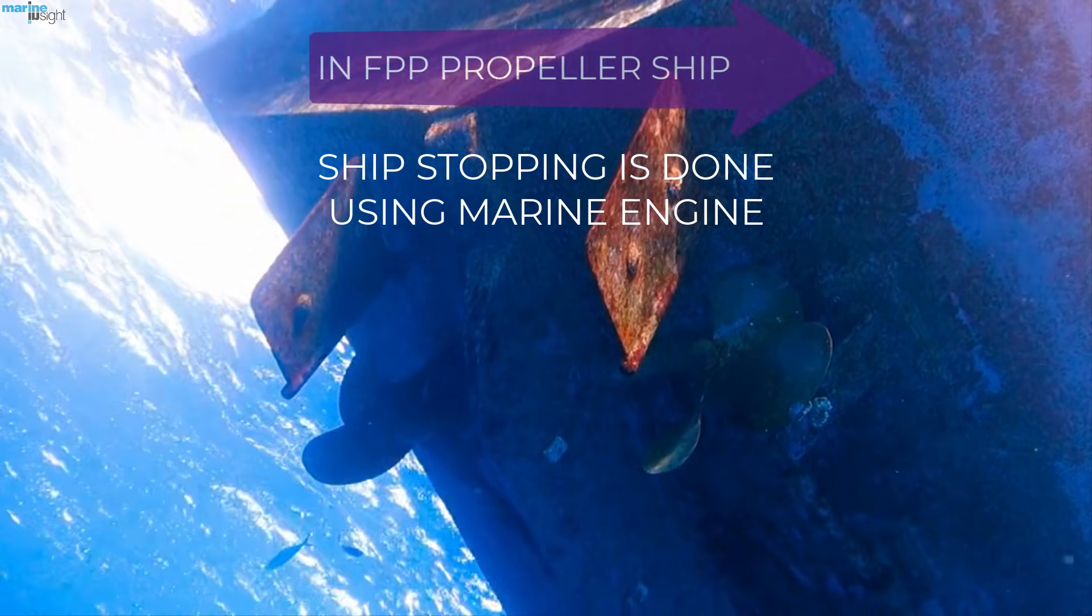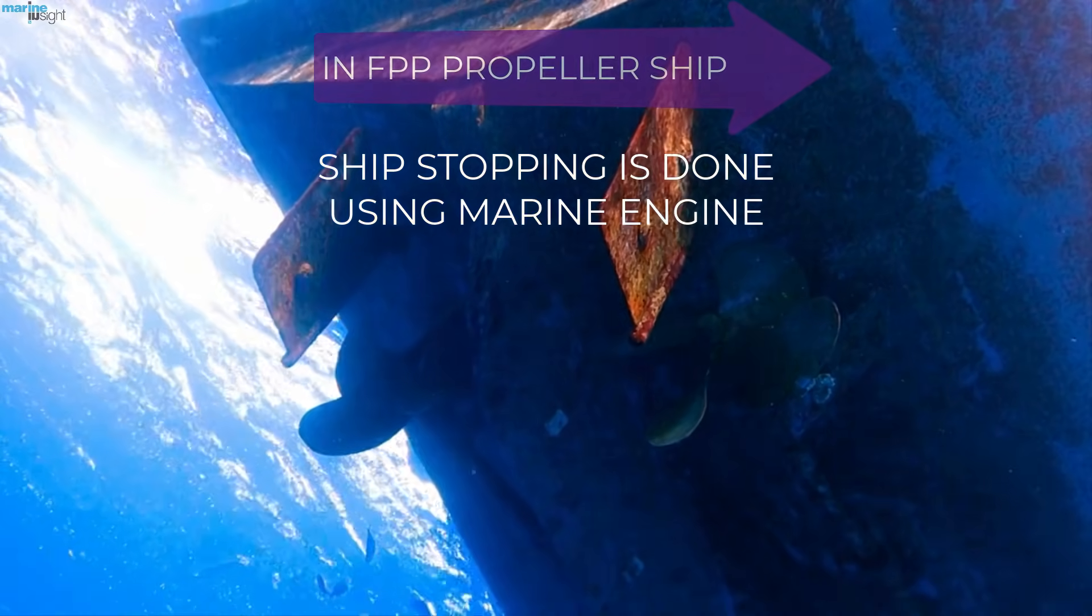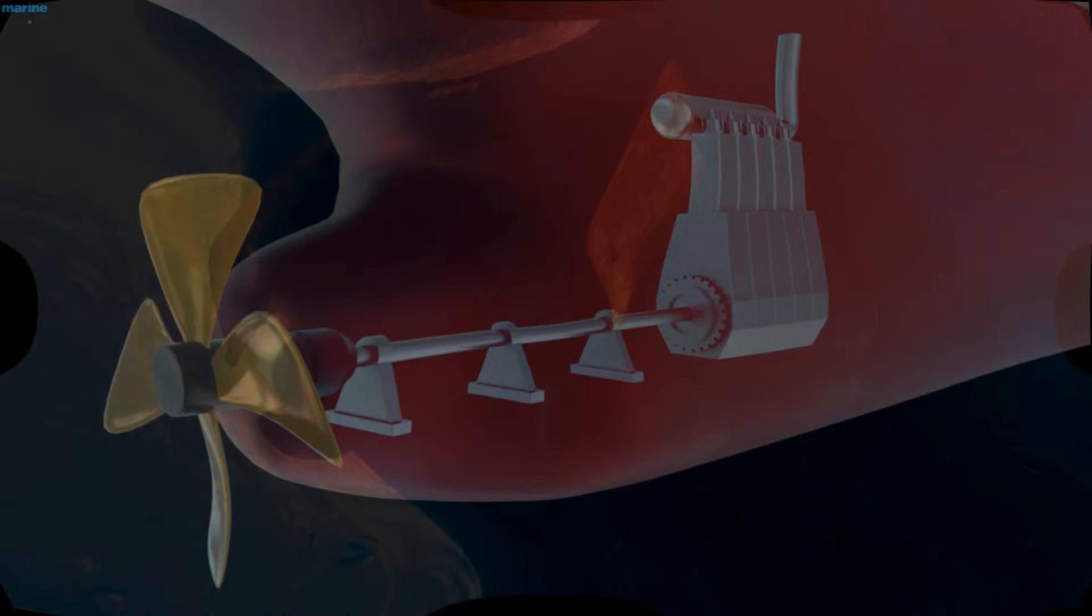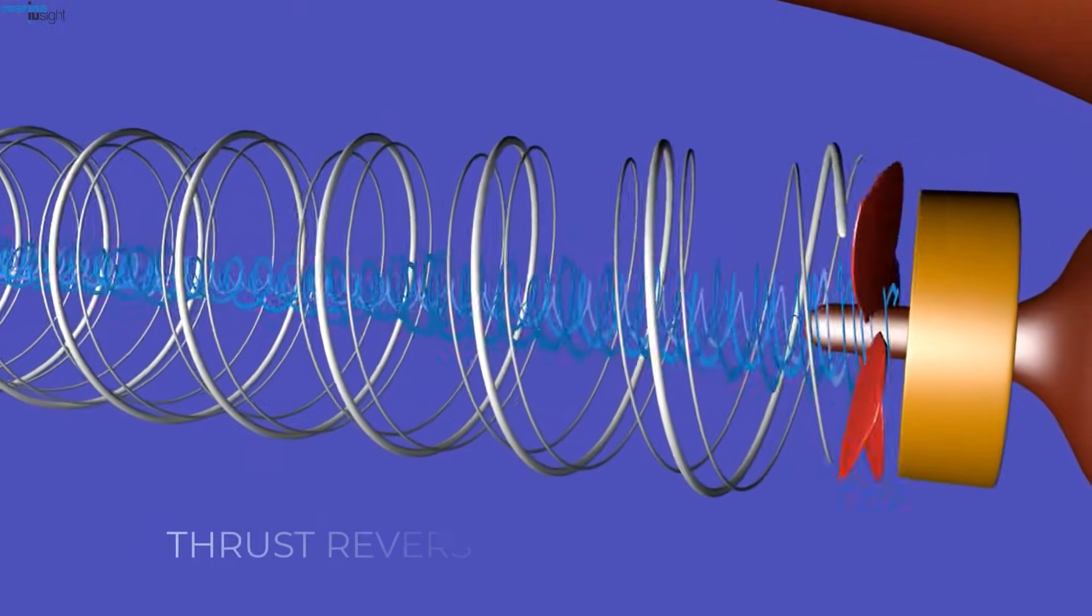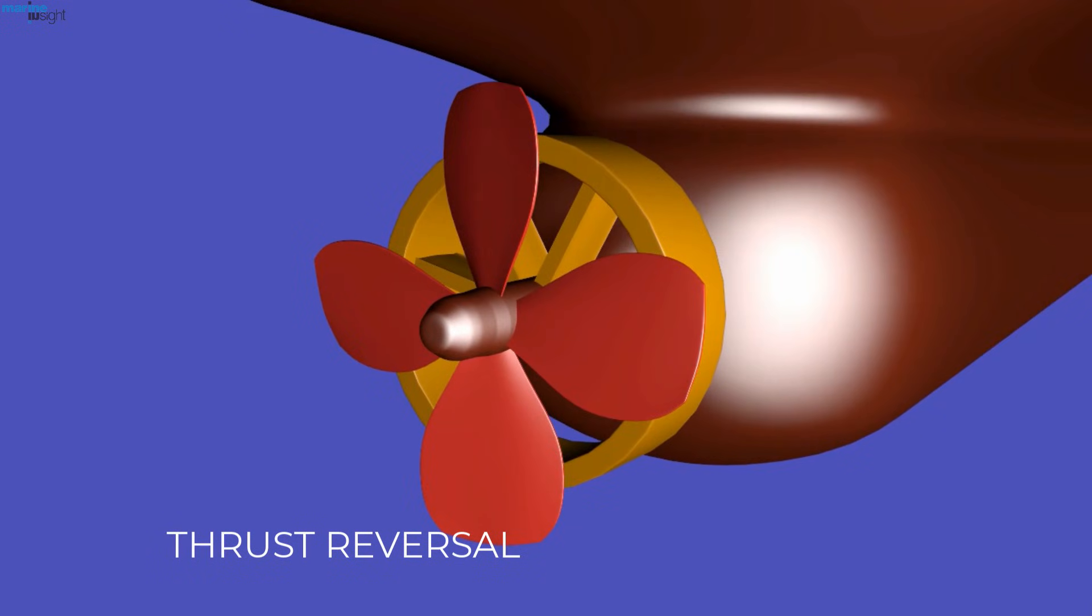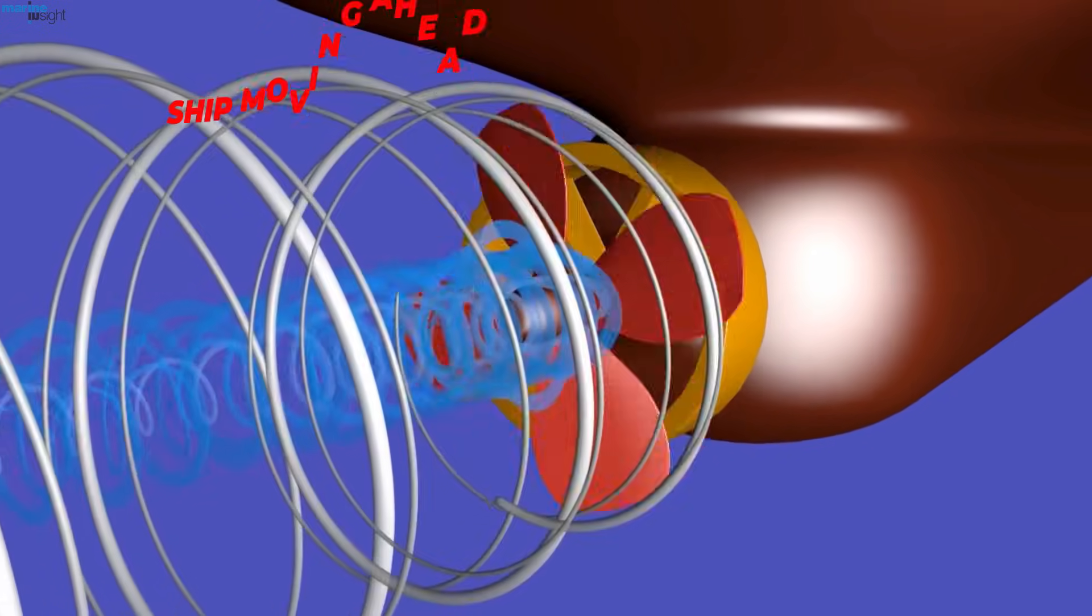Back to the topic, the halting of the ship is done using the marine engine. Whenever a ship needs to be stopped, reversing of the marine engine or propeller direction is carried out to generate an opposite thrust, which ultimately reduces the ship's speed and makes it stop as required.